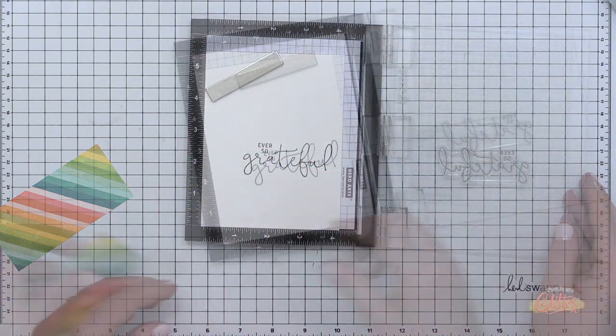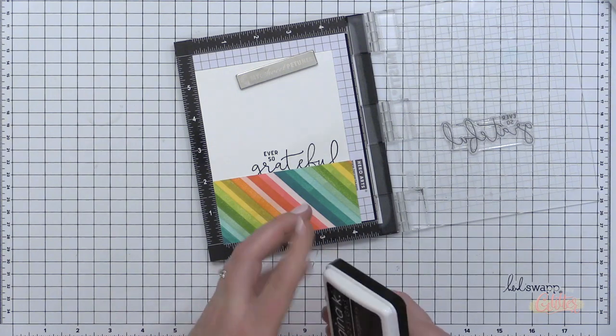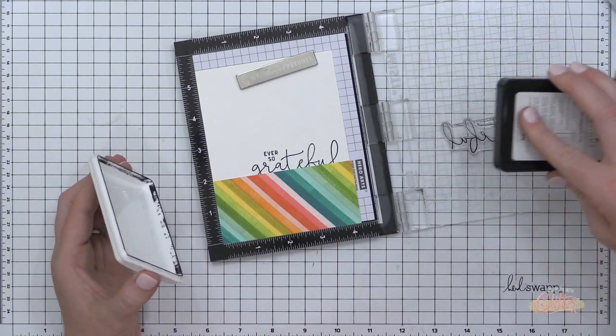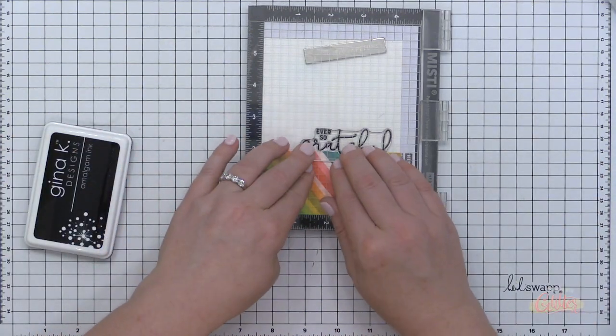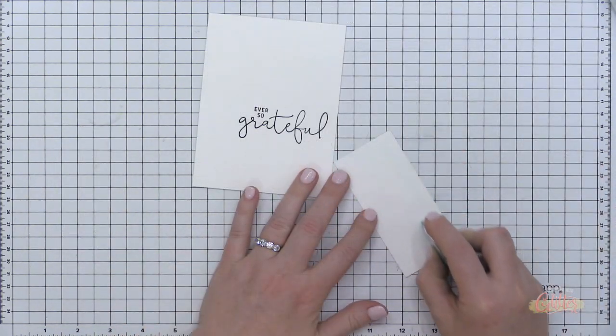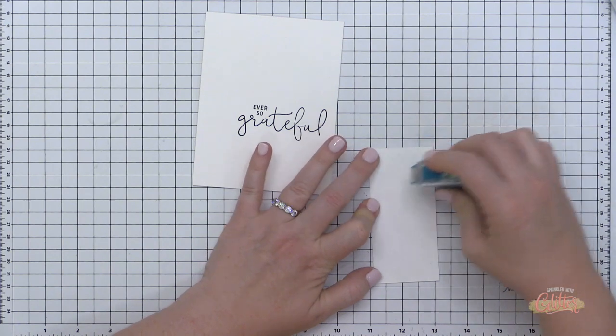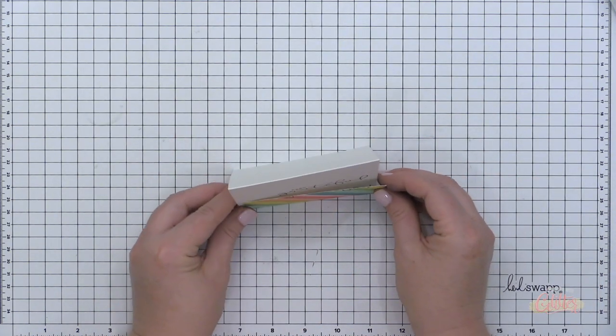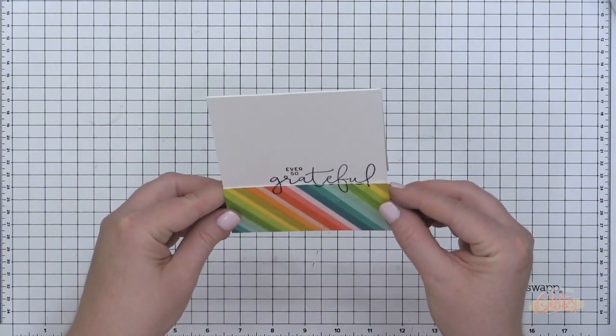I've stamped it once, and then I'm going to place this rainbow stripe paper into the corner where I'm going to adhere it onto my card front. I'm going to re-ink the stamp again and then stamp this onto that pattern paper that I created. That's going to allow the sentiment to flow smoothly from the card base to this little area on the card front where I'm adding this pattern paper.